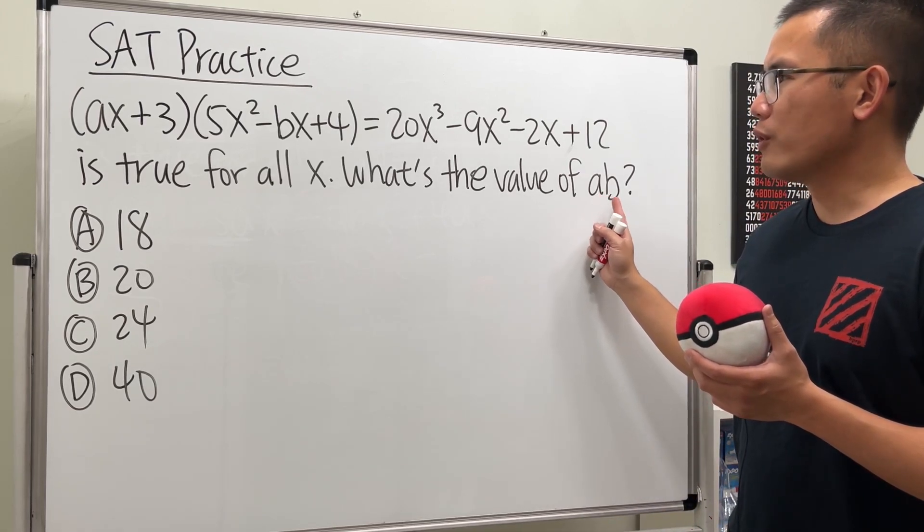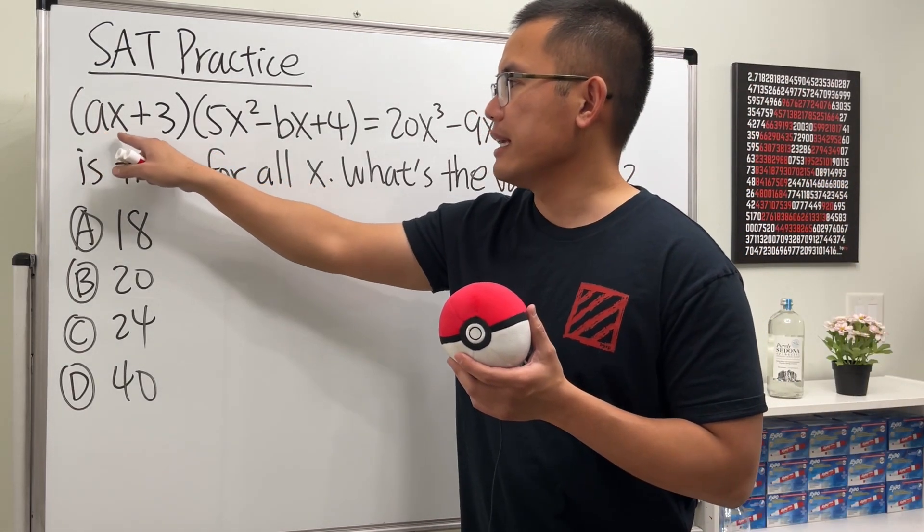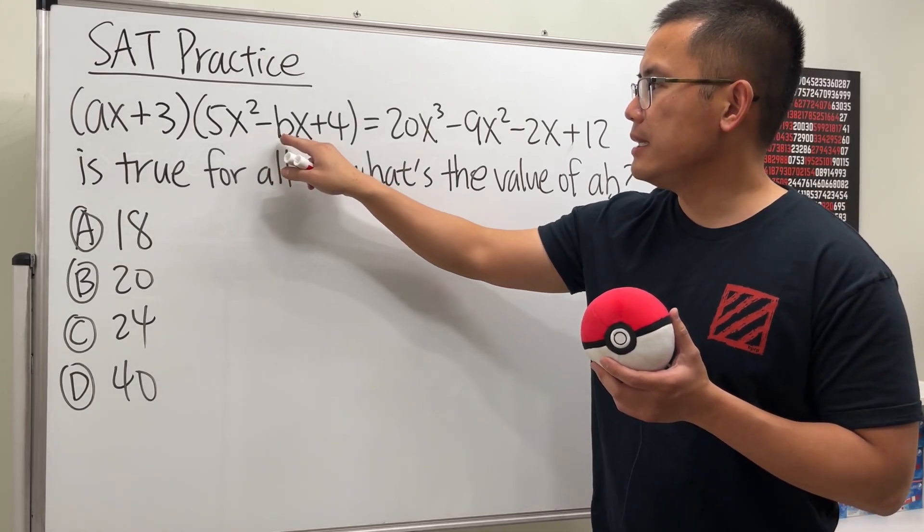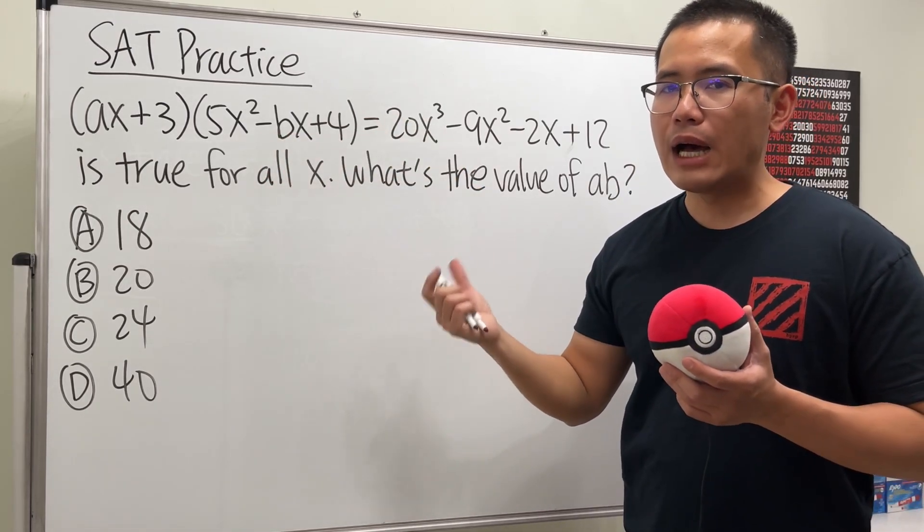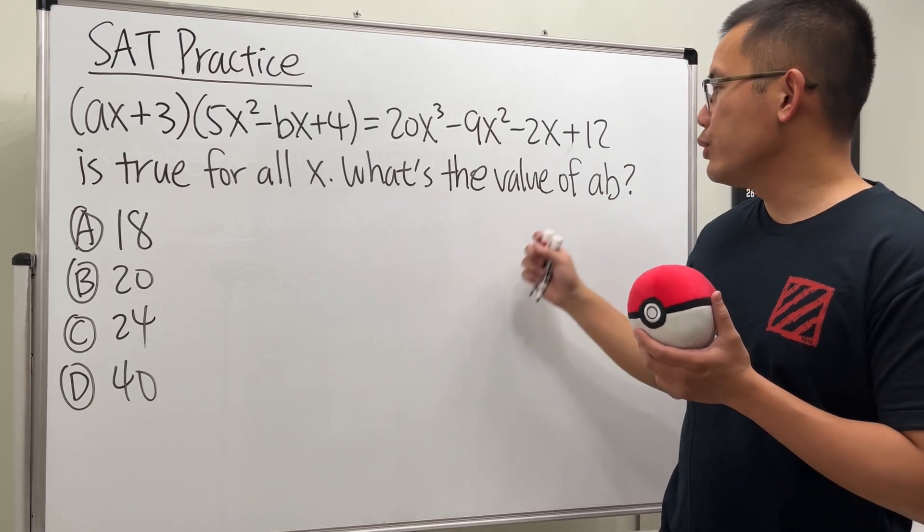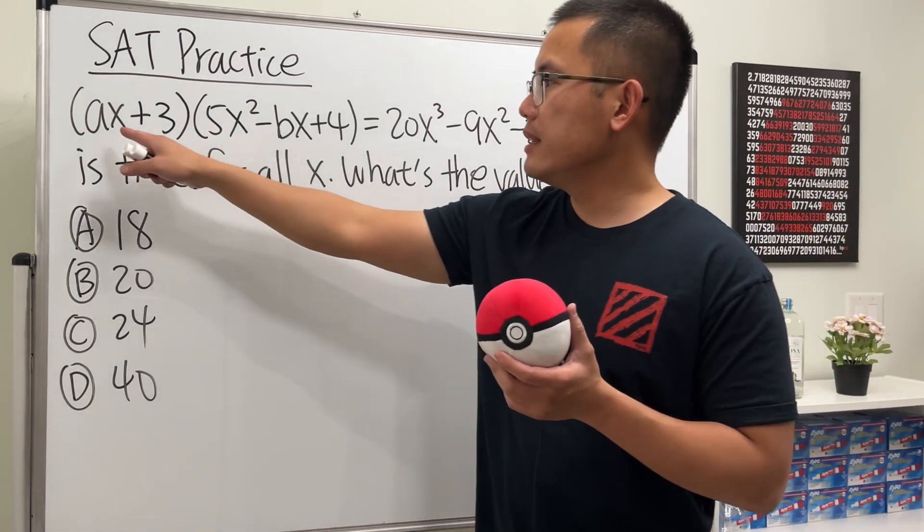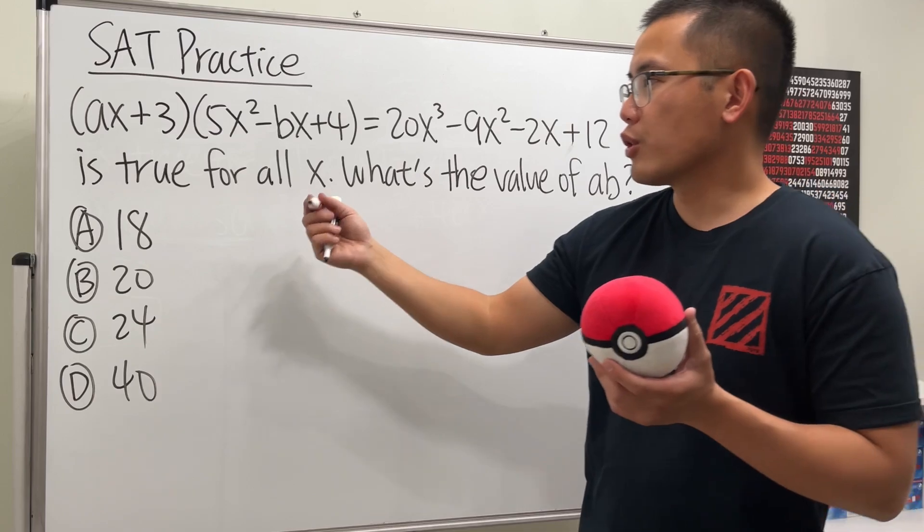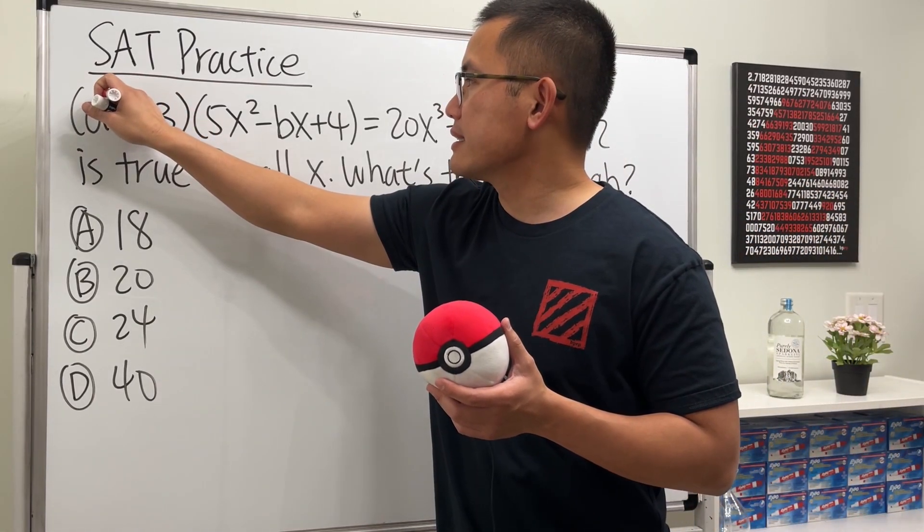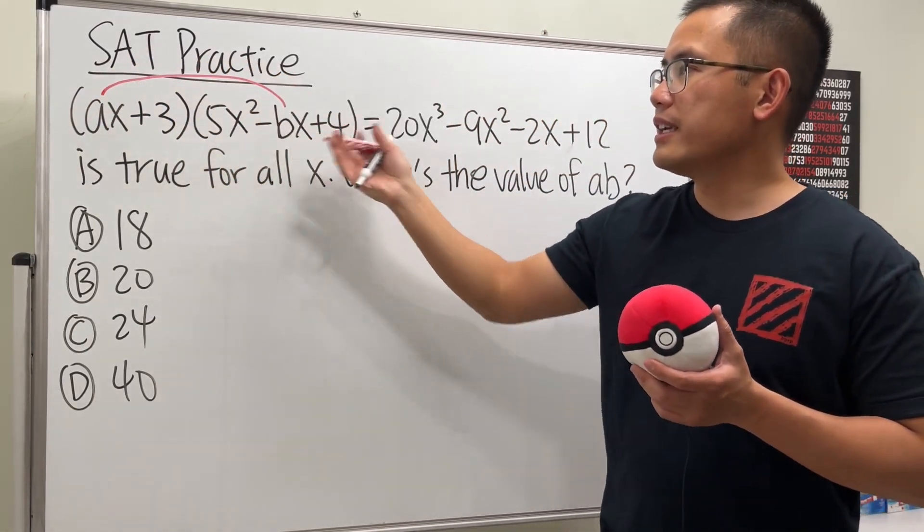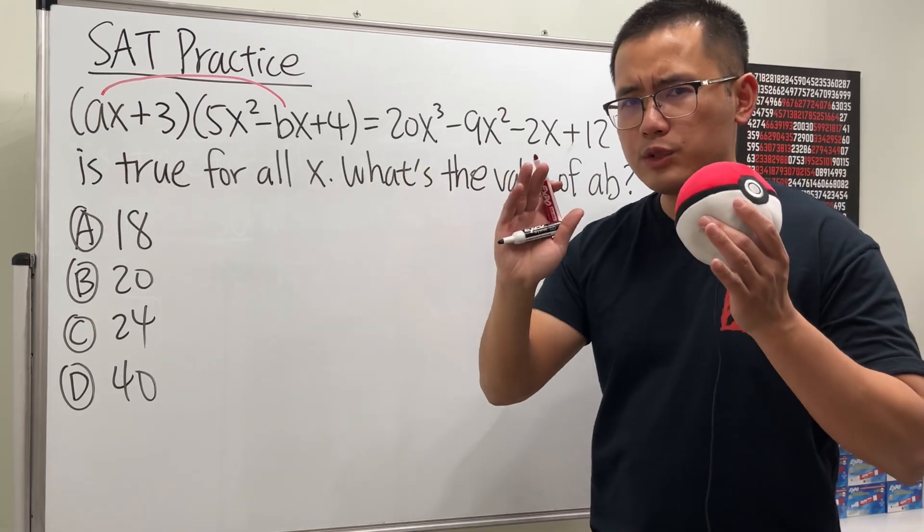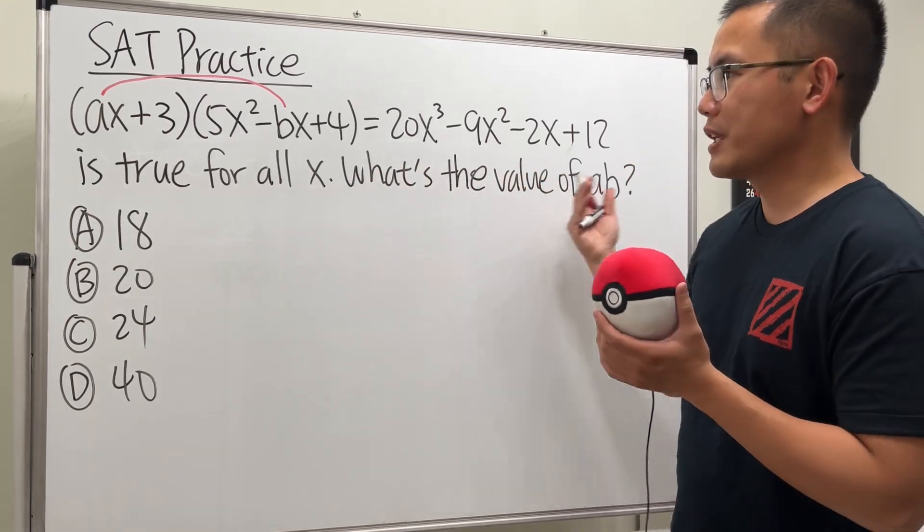So, we want the value of ab, and we have the ax here, and then we have the negative bx here. This is how this kind of polynomial question works. I need to get ab, so I need to get this times that. So, let's just go ahead and multiply. I will take ax, just multiply with negative bx, right? Just that, because we just care about the ab.